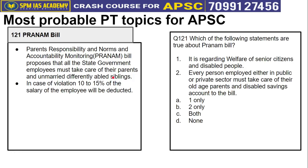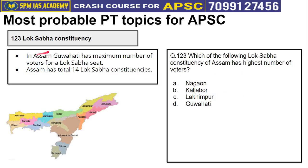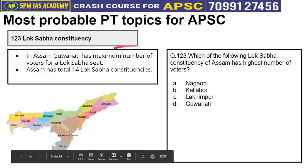In the most probable PT topics segment, we cover topics 121 to 123. Topic 121 is the PRANAM Bill — Parents Responsibility and Norms Accountability Monitoring Bill — which proposes that state government employees must take care of their parents and unmarried differently-abled siblings; in case of violation, 10 to 15 percent of salary will be deducted. Topic 122 is about P.K. Bejbarua, appointed by the Union Ministry of Commerce as Chairman of the Tea Board of Assam for the second time — he is the first non-IAS Chairman of the Tea Board. Topic 123: Assam has a total of 14 Lok Sabha constituencies, and Guwahati has the maximum number of voters in a Lok Sabha seat.